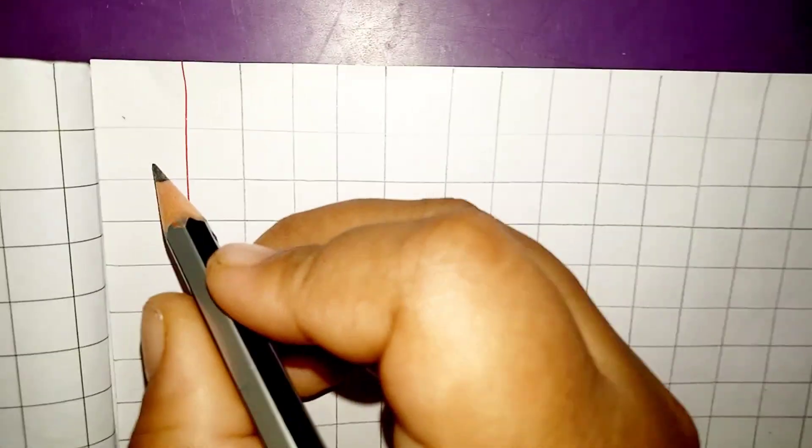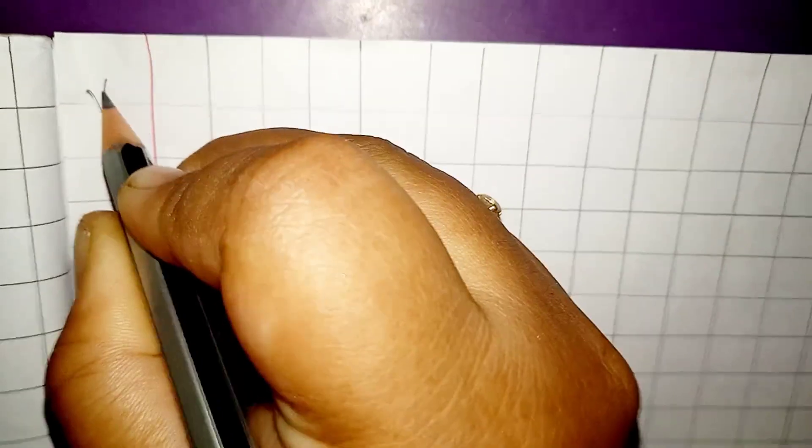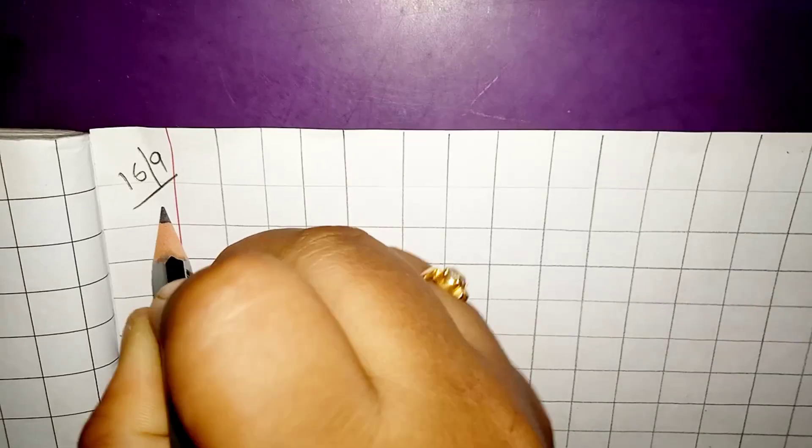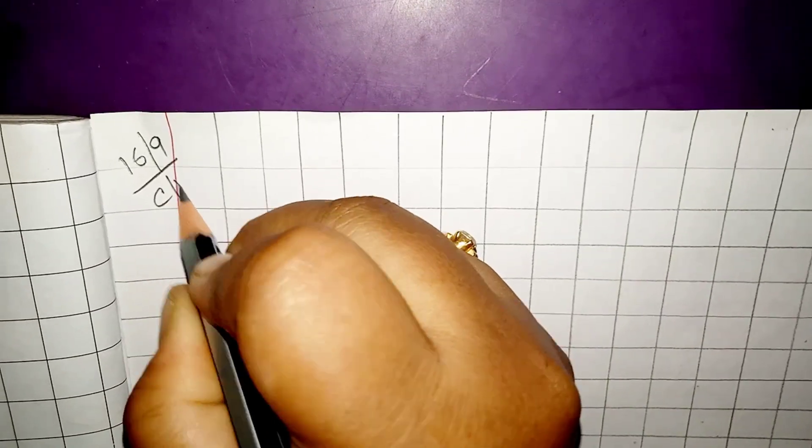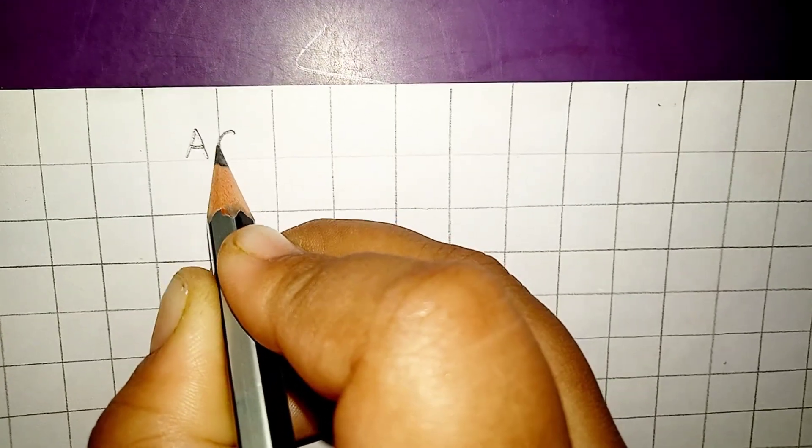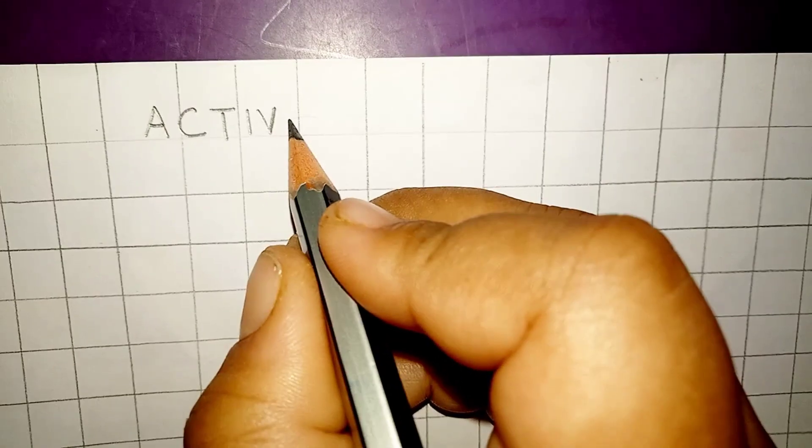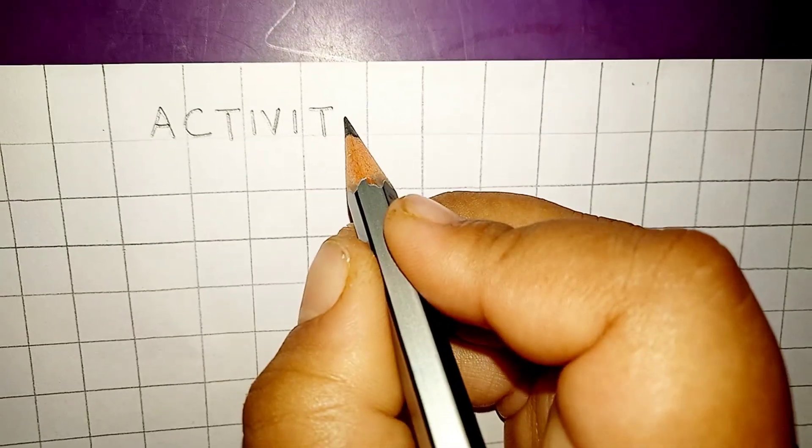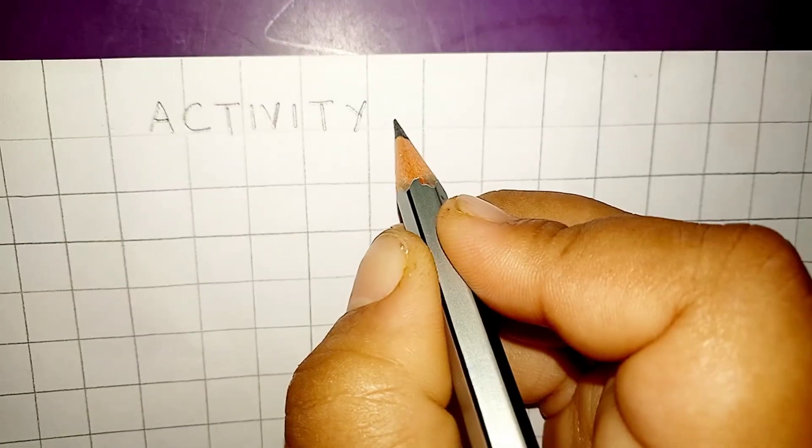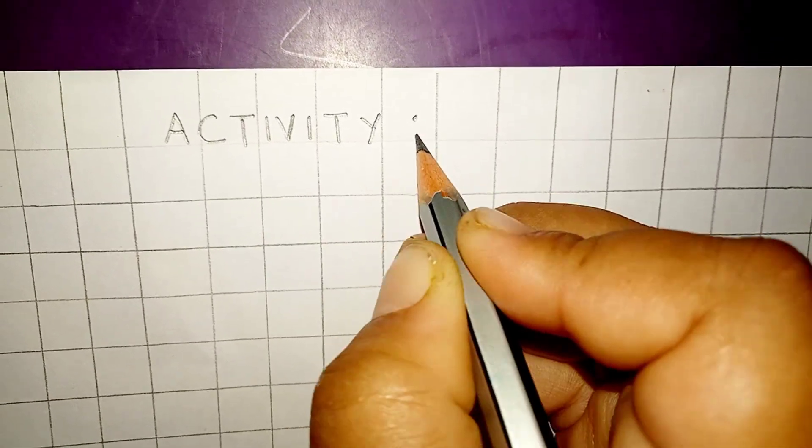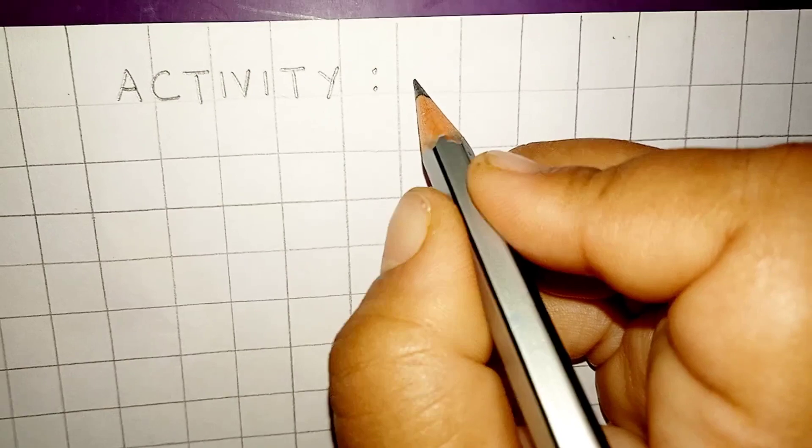We will first write date here with classwork. Then we will give heading that is Activity. Activity, give two dots, yes. And right here, Triangle.